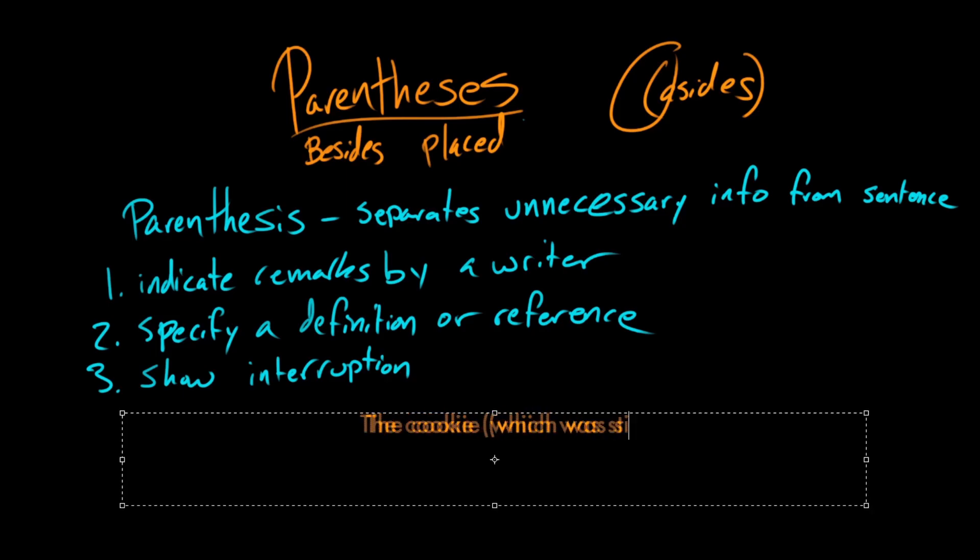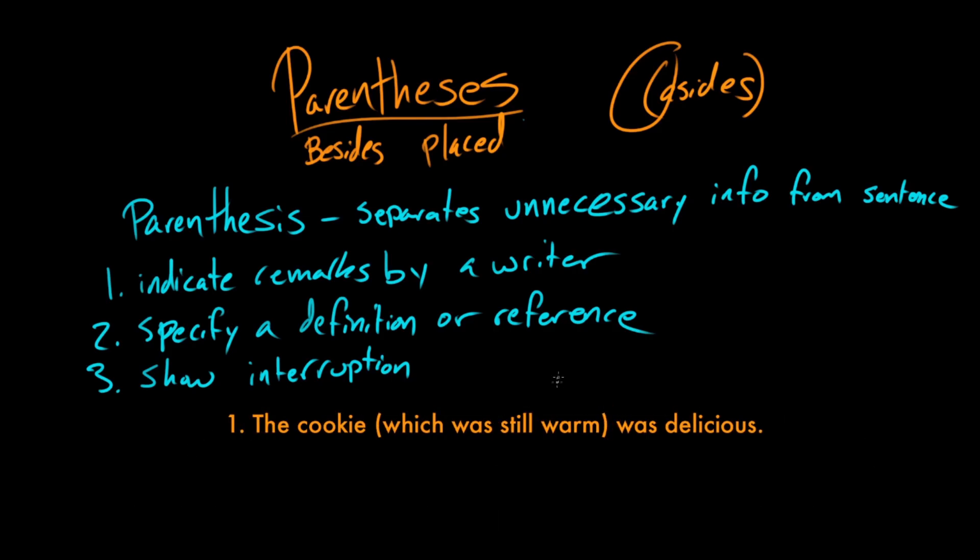All right. So let's take these one at a time. So here we've got something like, the cookie, which was still warm, was delicious. Now we could conceivably take that out of the sentence, right? Because the sentence is basically, the cookie was delicious. But if we wanted to add an additional remark by a writer, whoever ate the cookie, namely me, we would put in this parenthetical remark. It's some extra information. And when I say parenthetical, I'm talking about this little aside here. That's what I mean by a parenthetical. So this is what's called a parenthetical aside.